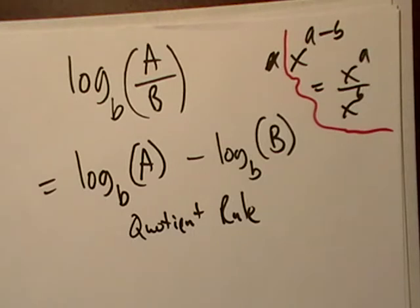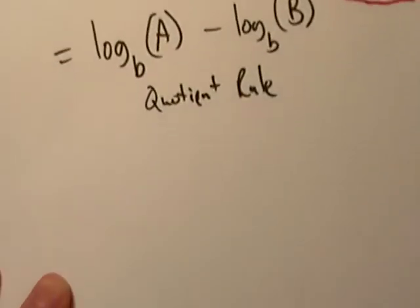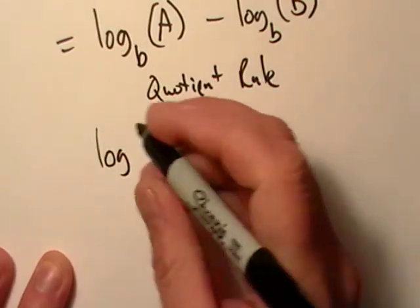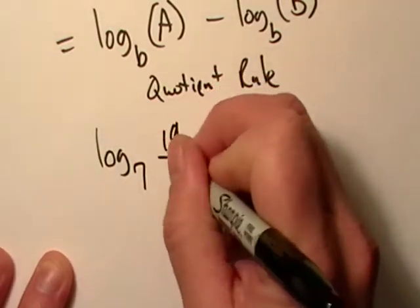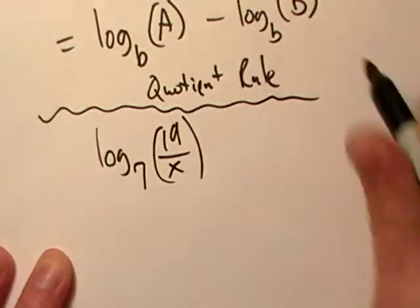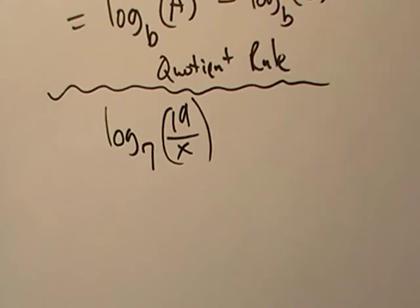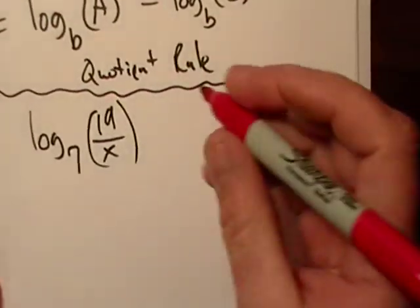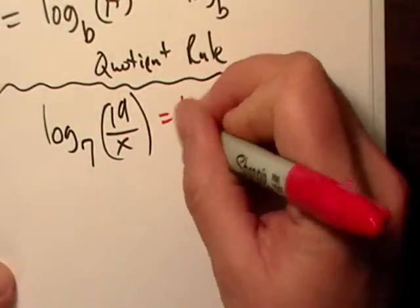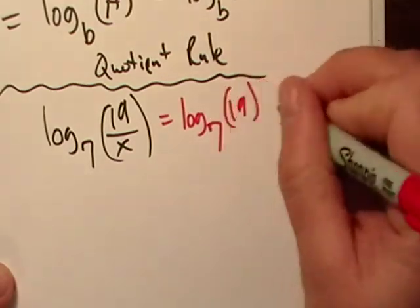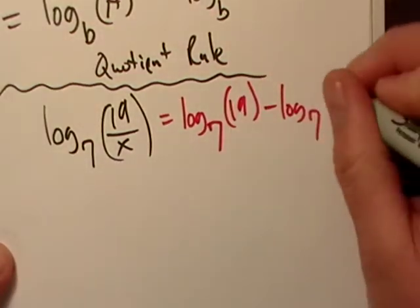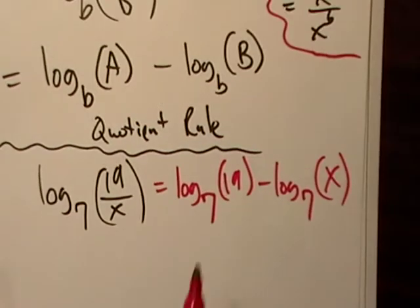We're going to do the same thing. It's just basically a division problem. Logarithms really, they're exponents. That's what they are. So let's go log, this looks kind of wacky. Log base 7, 19 over x. That's where you are right there.